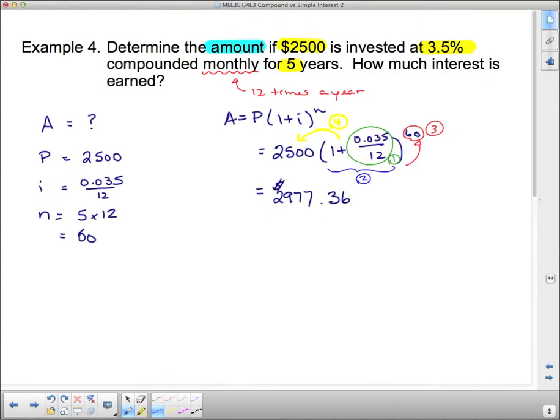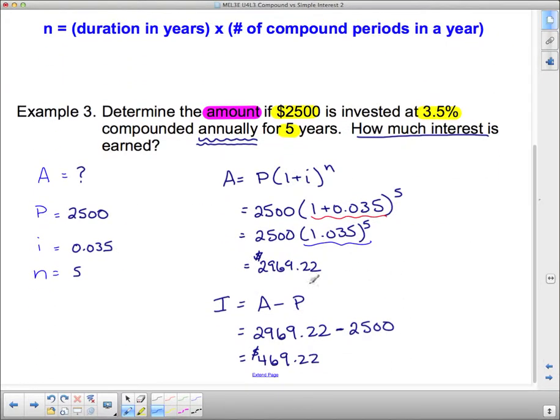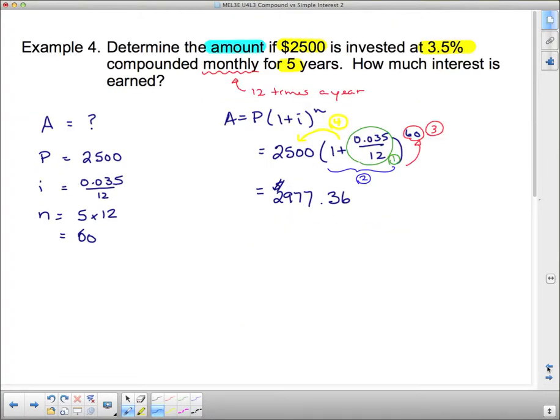Now, what was the difference between this one and the last one? Well, let's look back at the last one. Our final answer was 2,969.22. So I actually have more money this time.